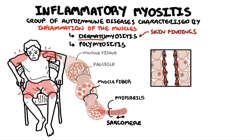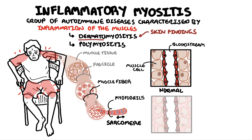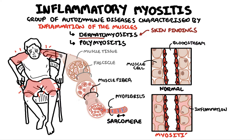Here we are looking at normal muscle tissue, and we can find blood vessels supplying it. When you have inflammation of the muscle tissue, this is termed myositis. There are many causes of inflamed muscle tissue — there could be infective causes, there could be traumatic causes — but we are mainly focusing on autoimmune causes, which are broadly referred to as inflammatory myopathies.